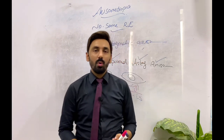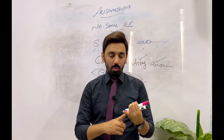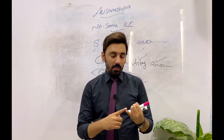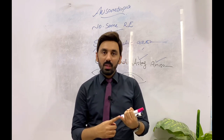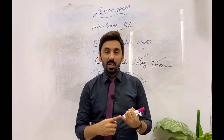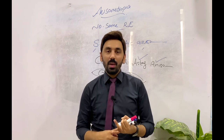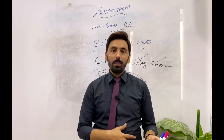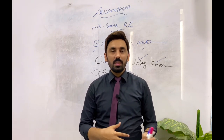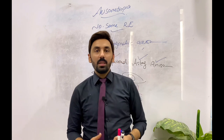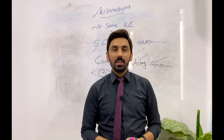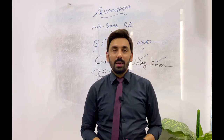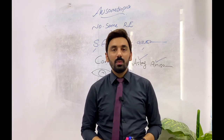We have discussed a lot about anisometropia: the definition, the etiology including acquired and congenital anisometropia, the classifications such as absolute and relative anisometropia, and all the different types in both spherical and cylindrical forms. In part two, the next lecture will cover different case scenarios regarding the treatment and management of anisometropia. See you in the next video.